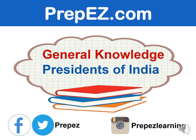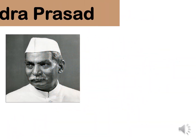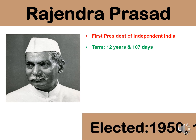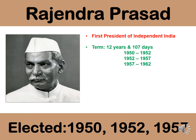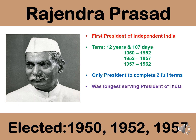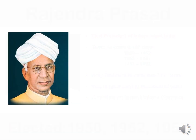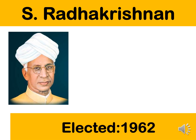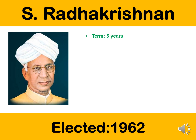The first president of India was Rajendra Prasad. He was the first president of independent India and he served a term of 12 years and 107 days. He was elected in 1950, 1952, and 1957. He was the only president to complete two full terms and he was the longest serving president of India. He was the candidate of Indian National Congress.